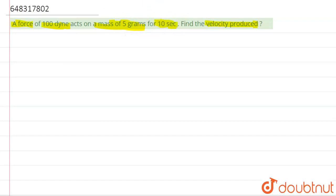Basically we have to find the final velocity. So firstly we have to find the acceleration. From the second law of Newton's motion, we know force is equal to mass into acceleration, so acceleration will be force by mass.